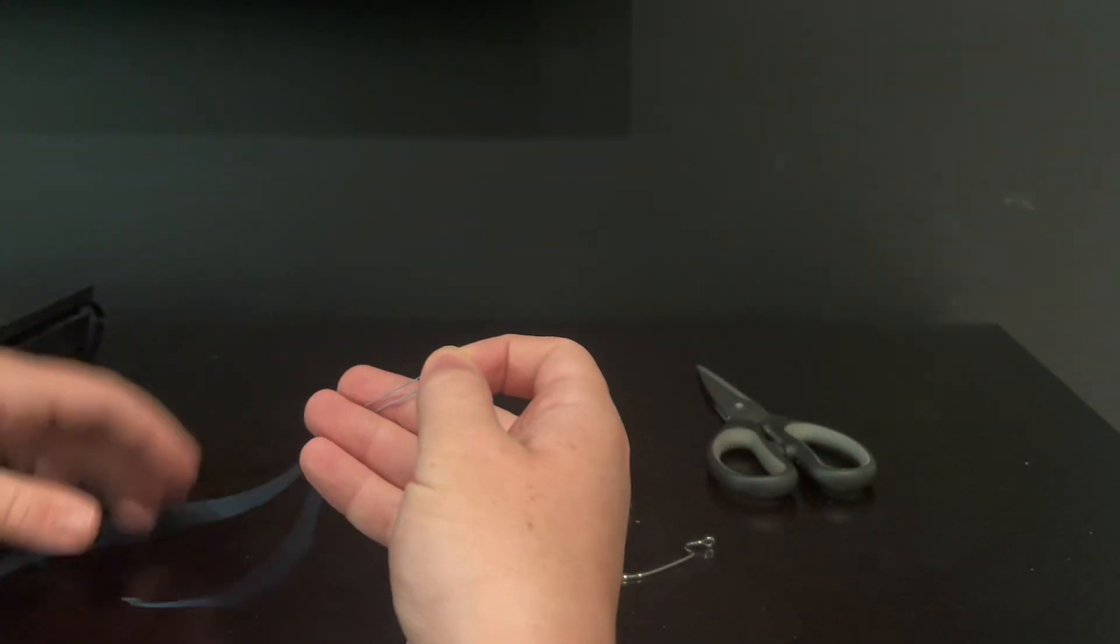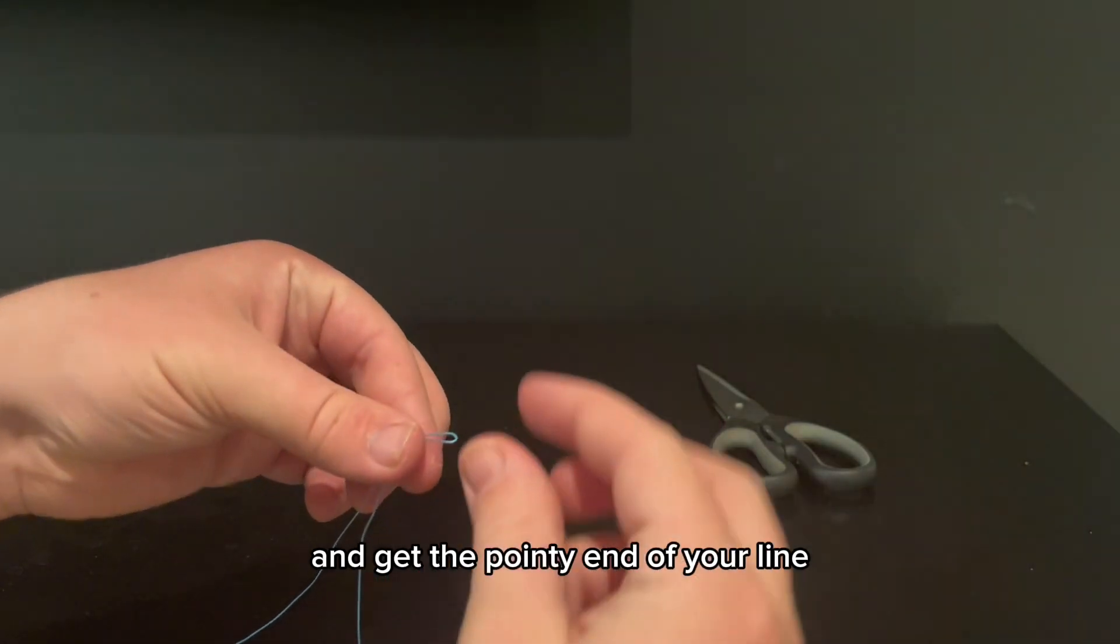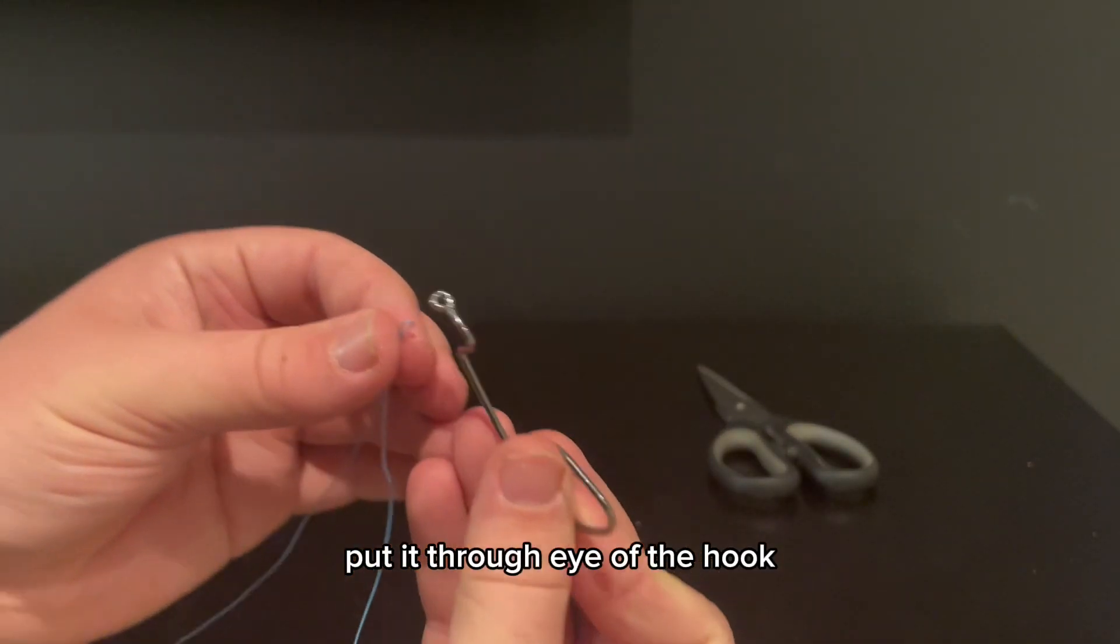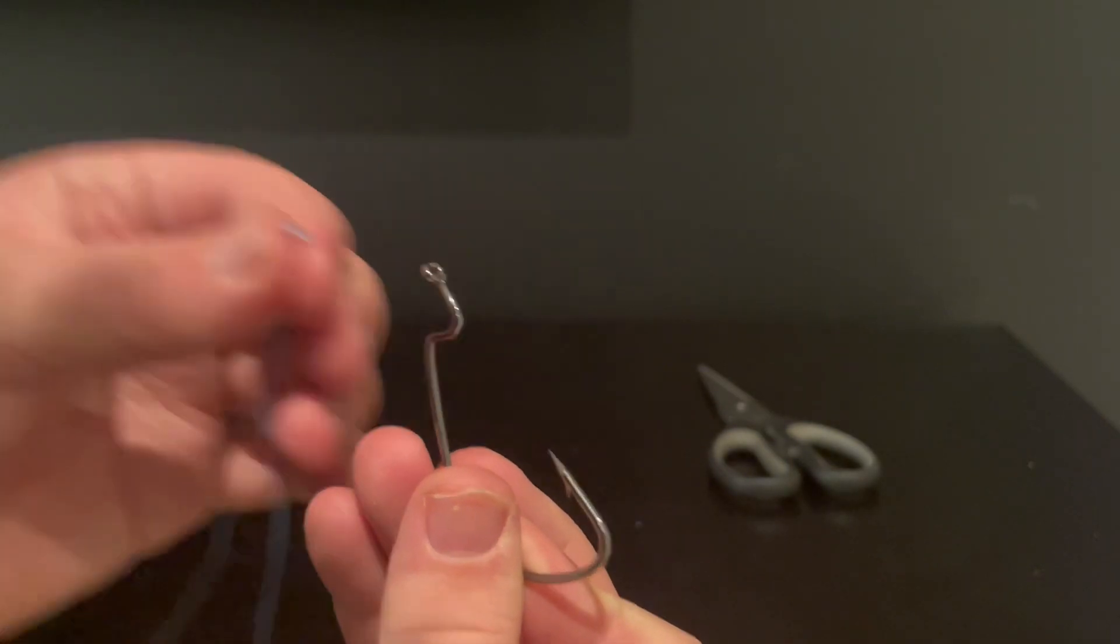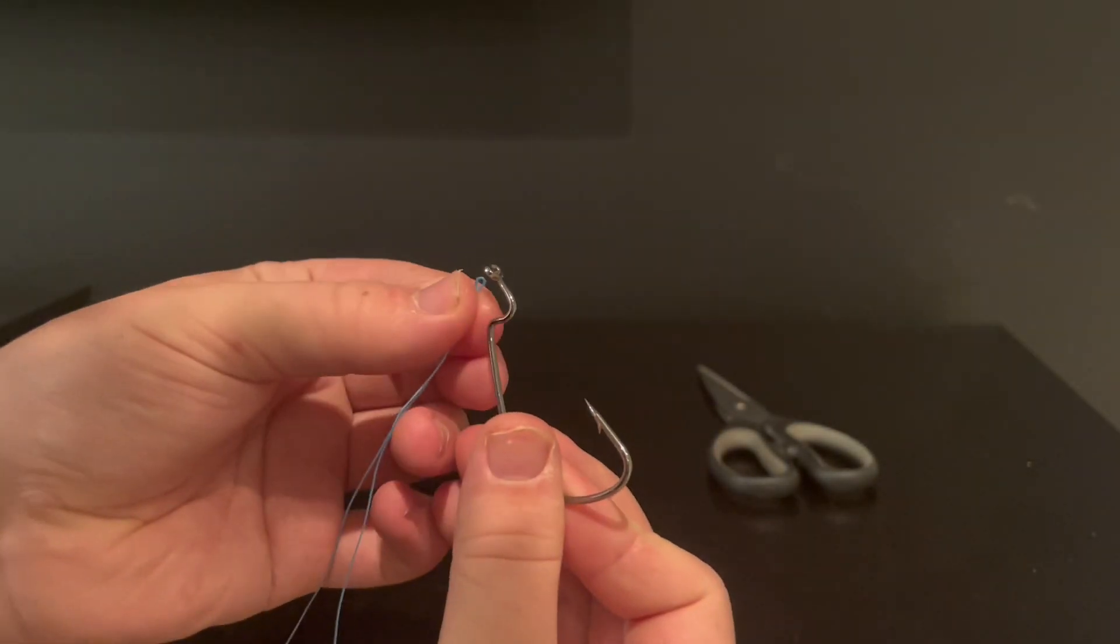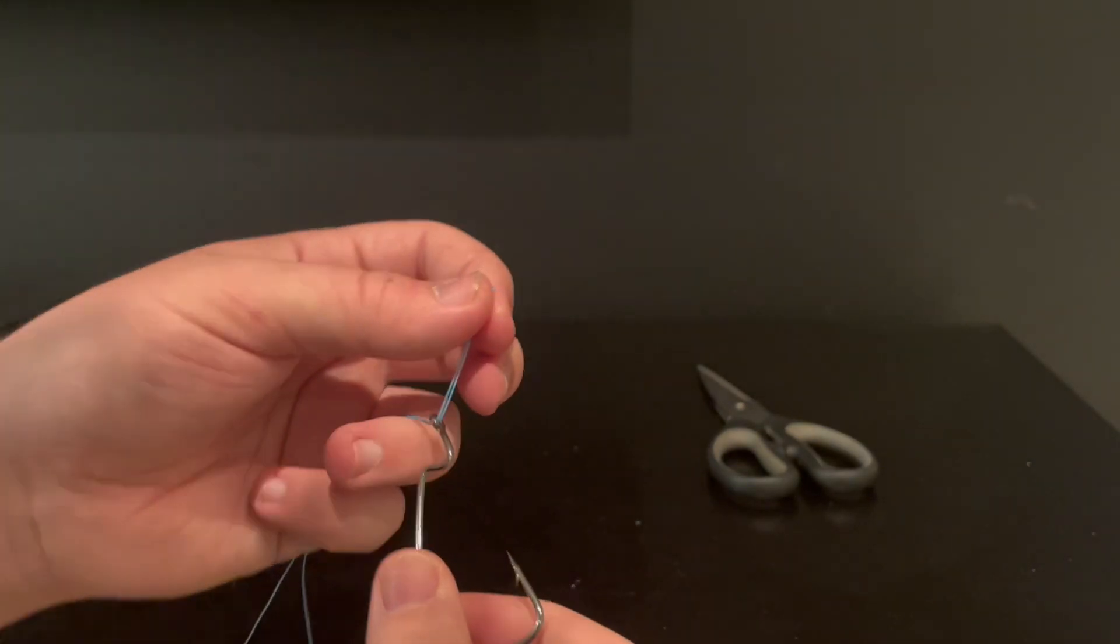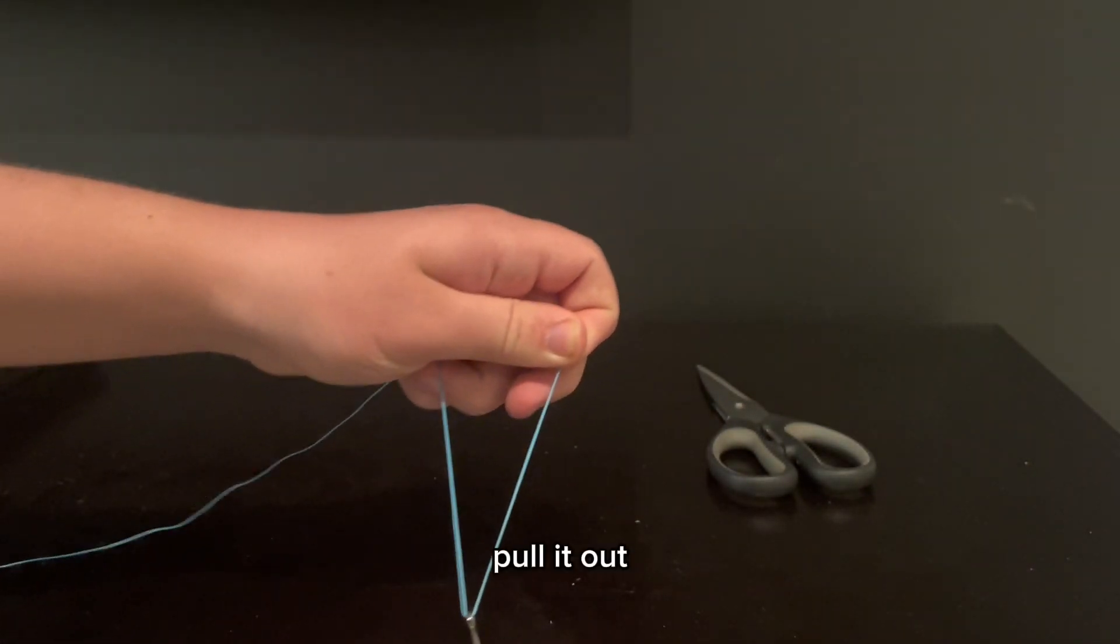Get the pointy end of your line and put it through the eye of the hook, then pull it out.